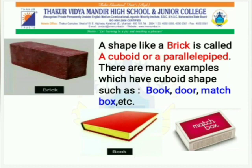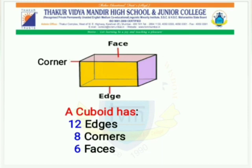Children, you must have seen bricks on a construction site. A shape like a brick is called a cuboid or a parallelepiped. There are many examples which have cuboid shapes, such as books, doors, matchbox, etc. Children, a cuboid has 12 edges, 8 corners, and 6 faces.